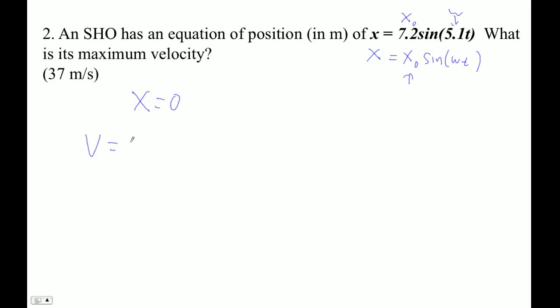So I can use v is plus or minus omega times the square root of x naught squared minus x squared. Now the maximum velocity then, v naught, is going to be—actually it's not plus or minus, it's just plus—omega times the square root of x naught squared minus x squared. Well, we're going to put in zero in there because the maximum speed happens at equilibrium.